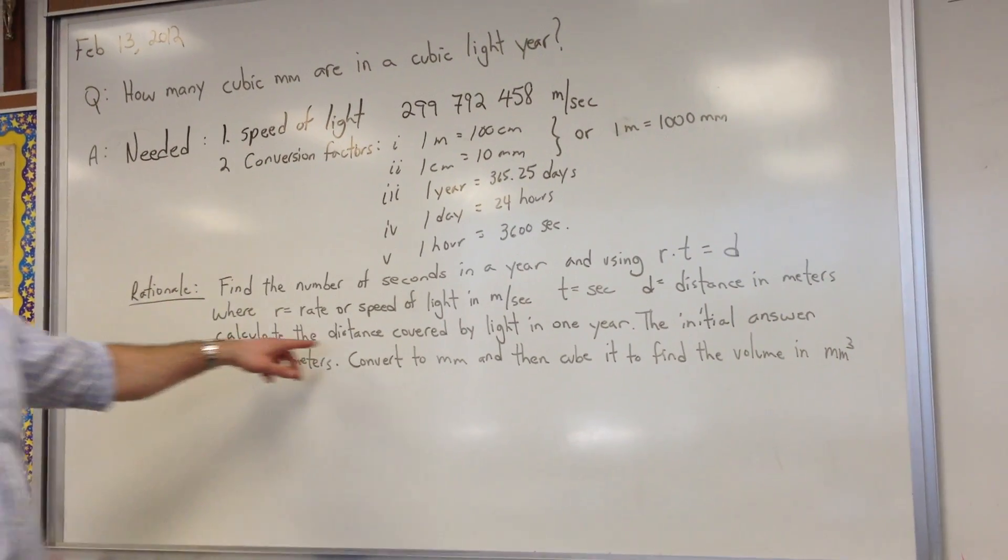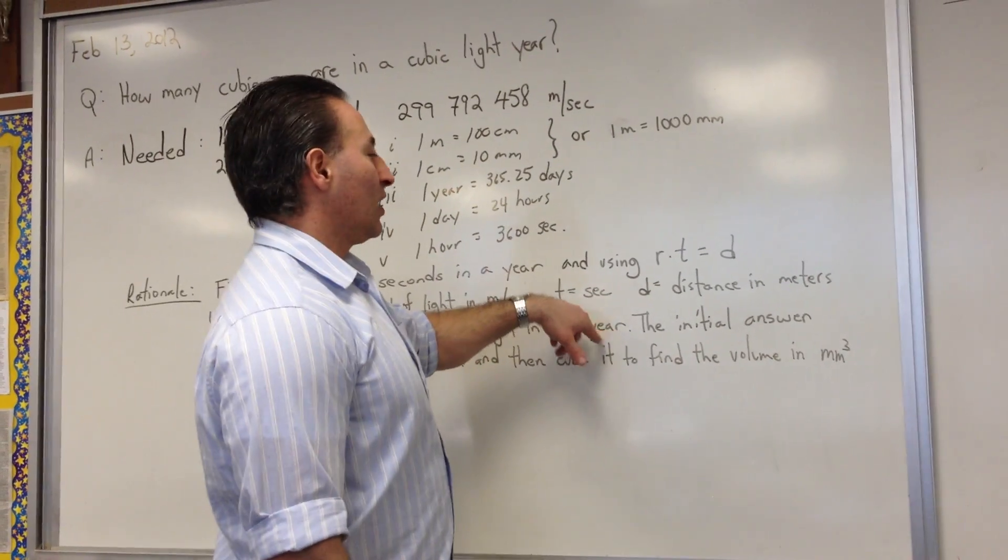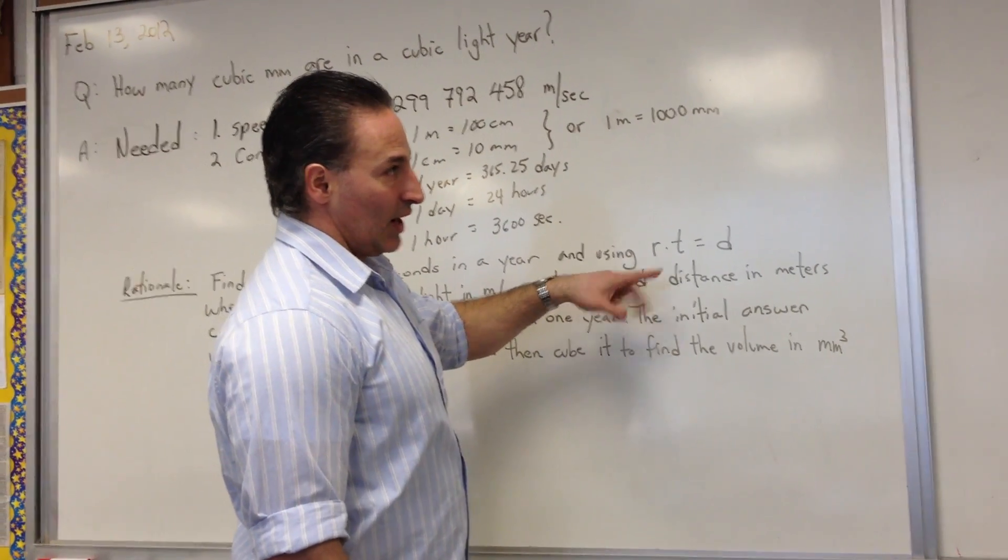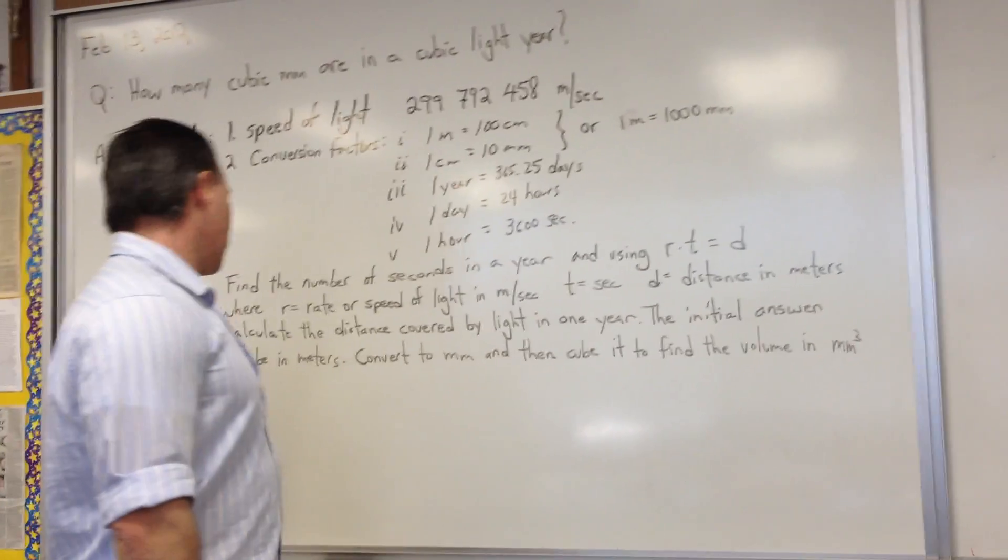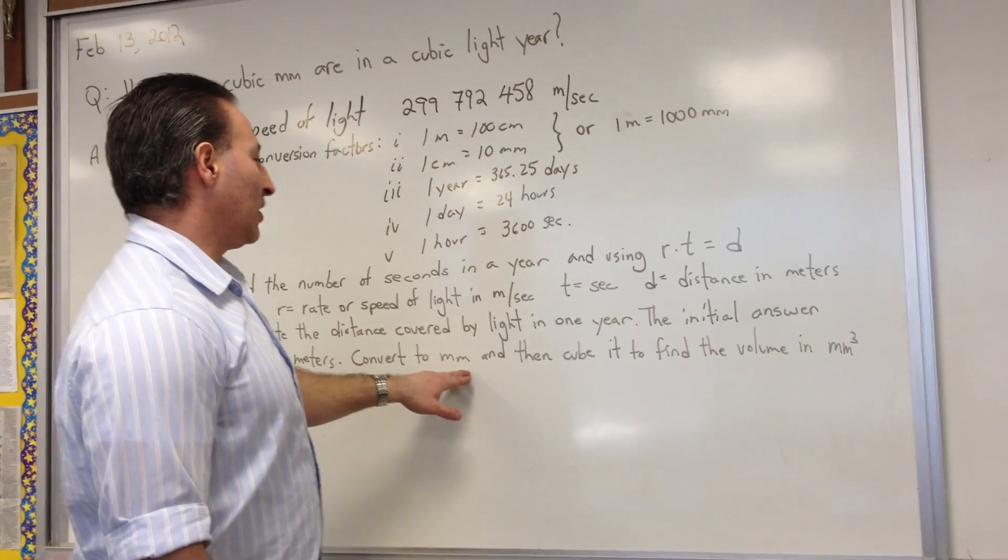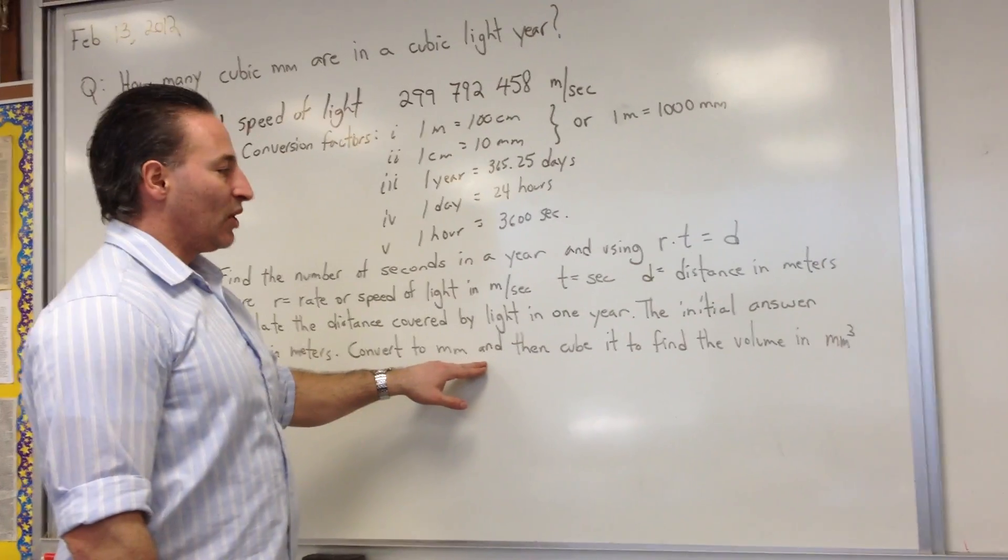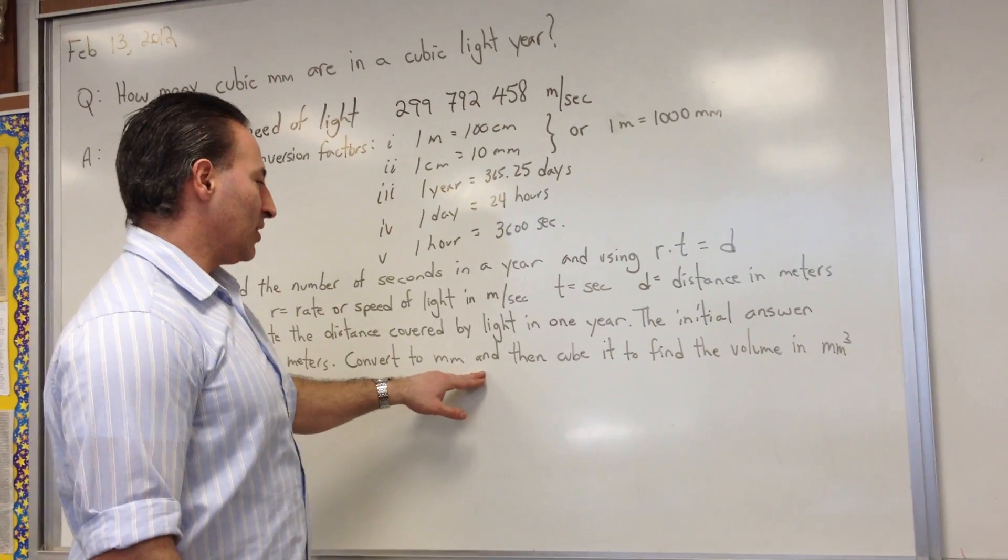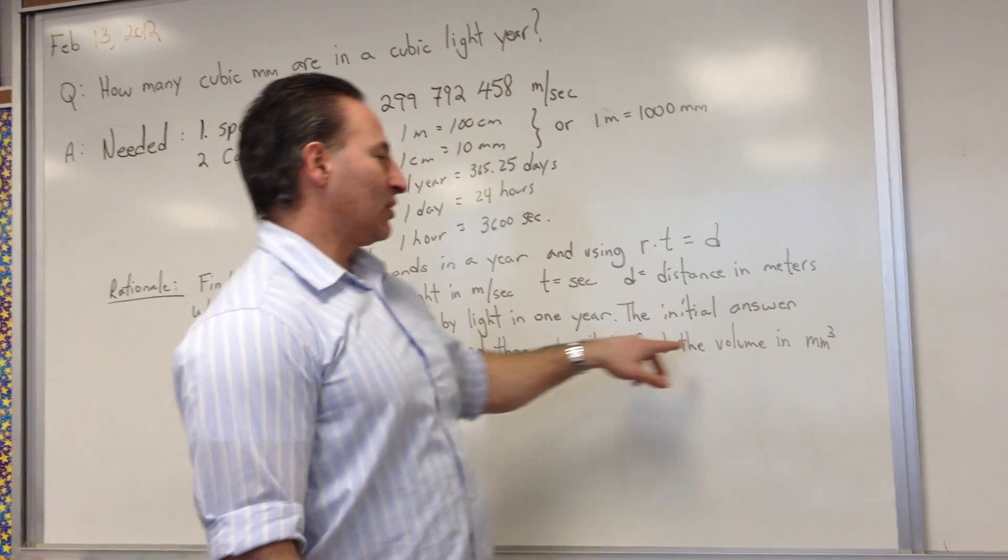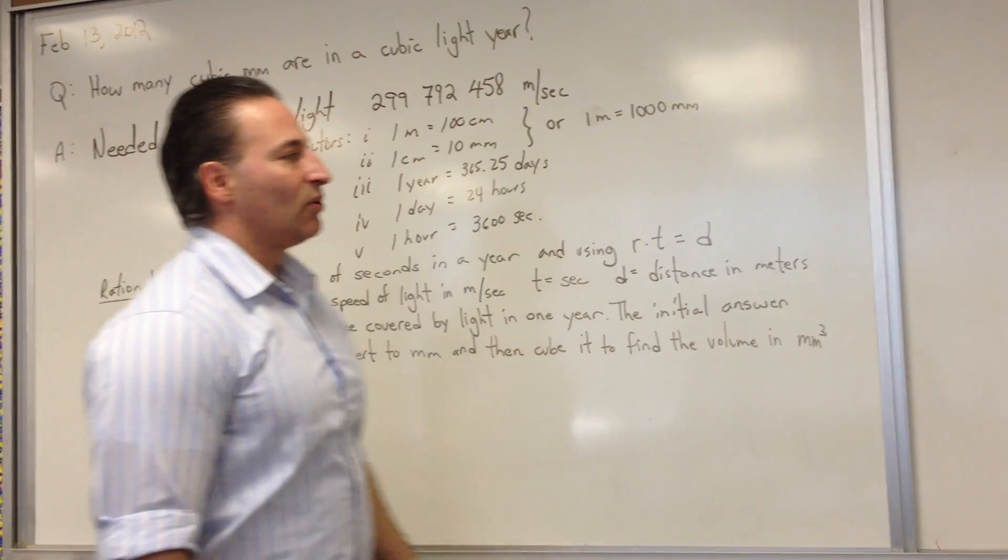Then we calculate the distance covered by light in one year, convert it to meters. Our answer will come out in meters, and then the initial answer will be converted to millimeters. Once we have the distance covered by light in one year in units of millimeters, we then cube that amount to find the volume in one cubic light year.